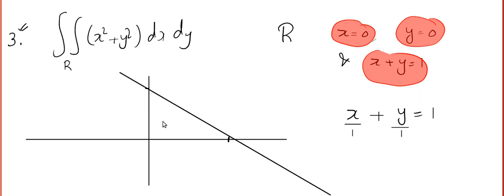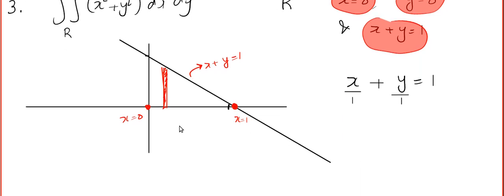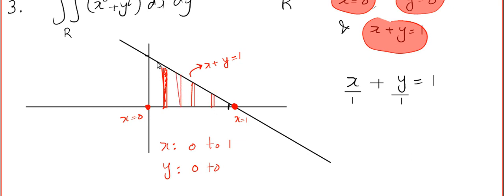This is the region of integration — a triangle with vertices (0, 0), (1, 0), and (0, 1). I draw a vertical strip. x varies from 0 to 1. y varies from the x-axis (y = 0) to the line. Wherever you draw the strip — at any x position — y goes from the x-axis up to the line, and the line gives y = 1 − x. The limits are ready.